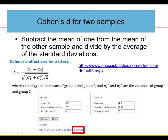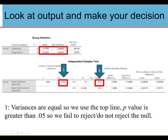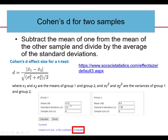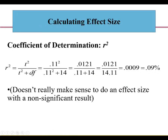For Cohen's d, using group means of 4.75 and 4.6 with standard deviations of 2.5 and 1.99 and n of 8 each, we get d = 0.06, which is very small. For r-squared, squaring the t-value and dividing by t-squared plus degrees of freedom gives 0.0009 — barely 0.09% of variance in the outcome is explained by the independent variable. It doesn't really make sense to calculate effect size for a non-significant result, but that's how you would do it.